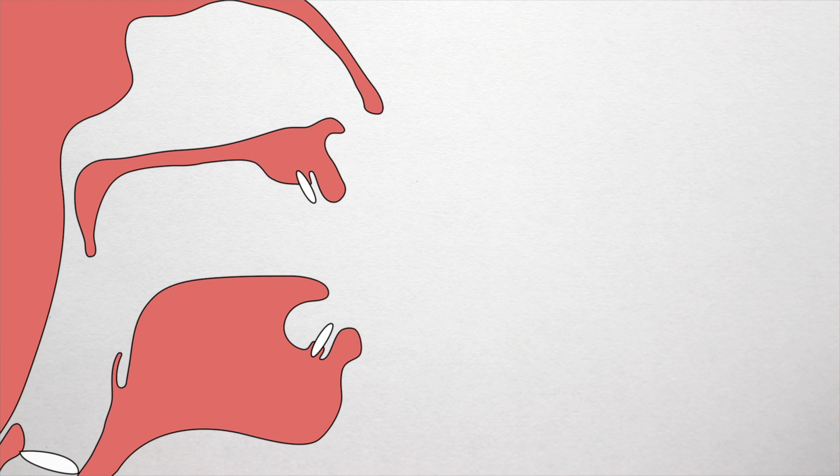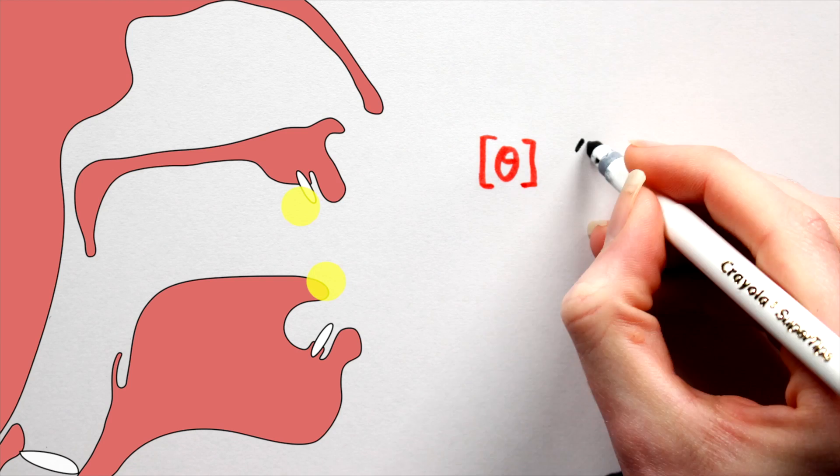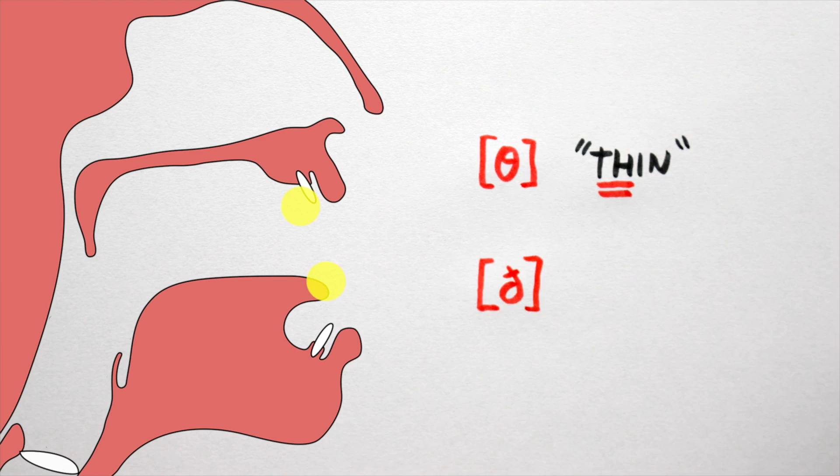Three, dental. Here, the tip of the tongue touches the upper teeth. We have two sounds here in English: tha as in thin, and tha as in this.